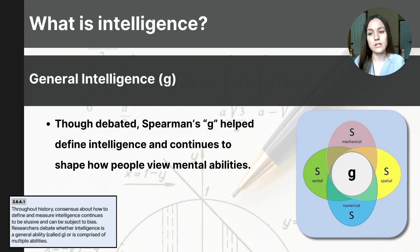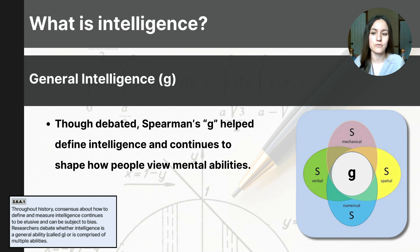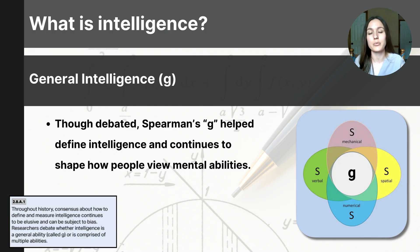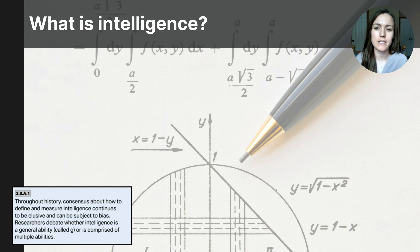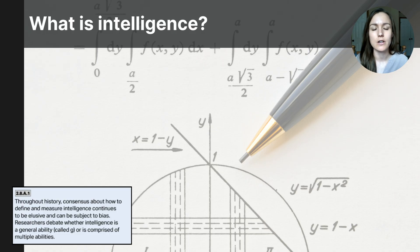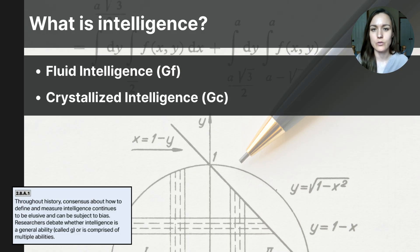Spearman's theory of general intelligence remains debated, but it's similar to how tests like the ACT provide an overall score based on different subtests. The key idea is that G is the underlying ability that predicts our performance in various tasks. Building on this idea, Raymond Cattell and John Horn expanded the concept of singular underlying intelligence by proposing that it actually consisted of two elements: fluid intelligence and crystallized intelligence.